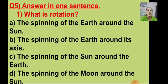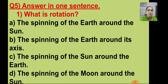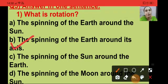Answer in one sentence. Here also four options are there and you are going to click on the right answer. Question number 1: what is rotation? Options are: the spinning of the earth around the sun; the spinning of the earth around its axis; the spinning of the sun around the earth; or the spinning of the moon around the sun. The right answer is option B - the spinning of the earth around its axis is called rotation.